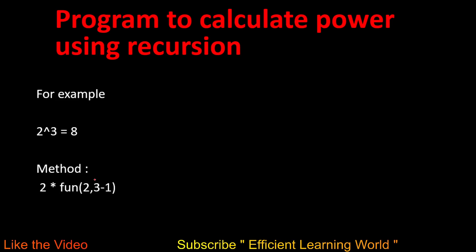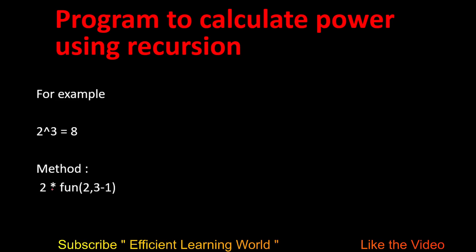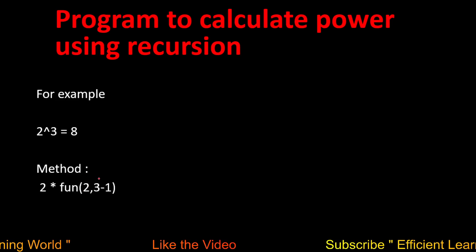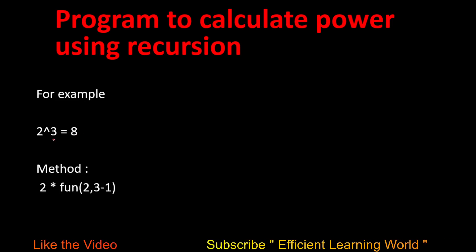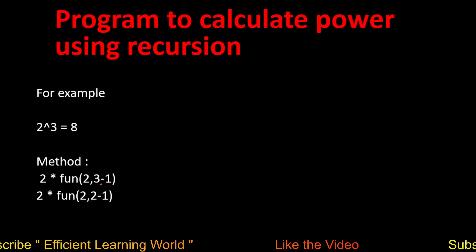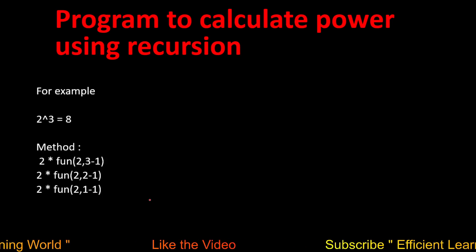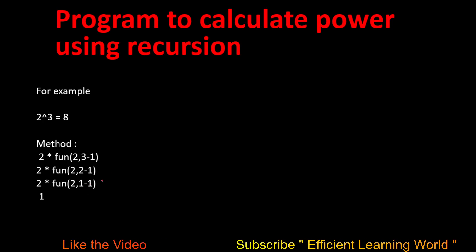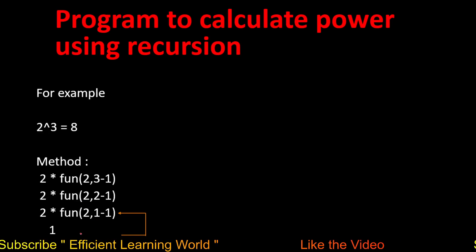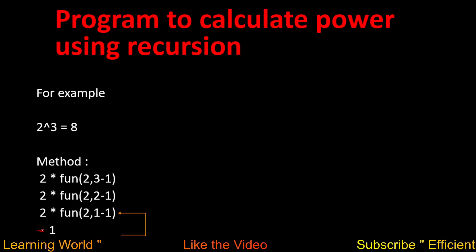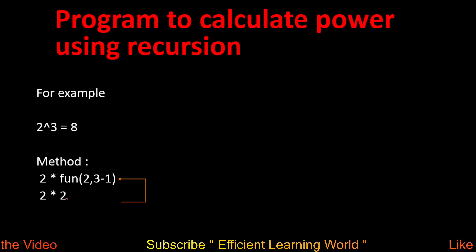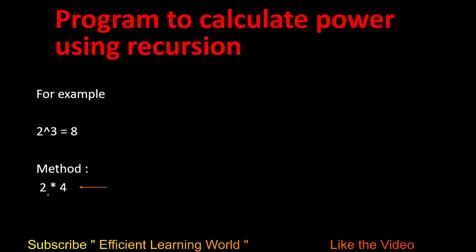The method I'll use is to multiply the base with a recursive call to the function, which receives two arguments: the base and a decremented power. For example, for 2 raised to power 3, the power decrements: 3 → 2 → 1 → 0. When we reach 0, that is the termination point. At that point we return 1, so 2×1=2, 2×2=4, 4×2=8.